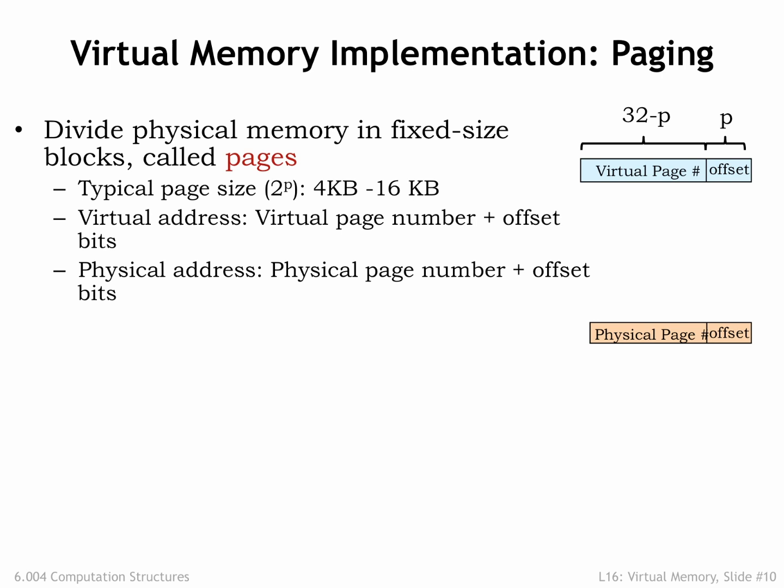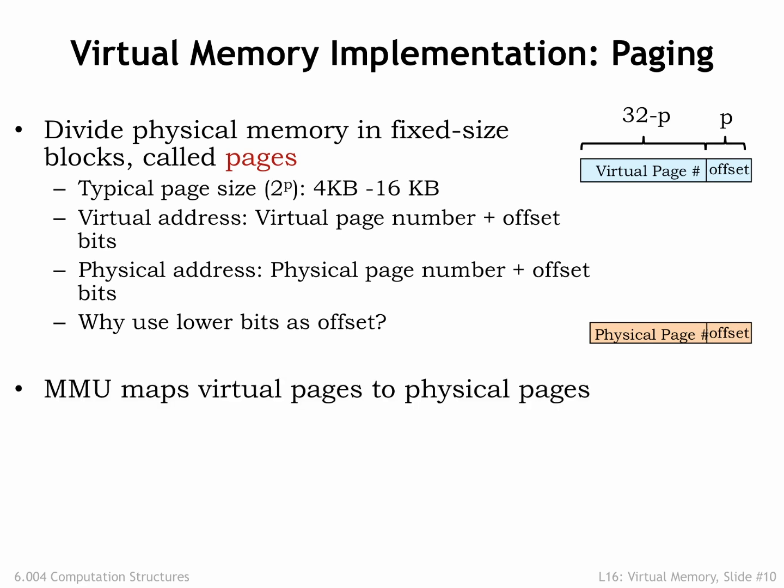We'll move entire pages from secondary storage into main memory. By the principle of locality, if a program accesses one location on a page, we expect it will soon access other nearby locations. By choosing the page offset from the low-order address bits, we'll ensure that nearby locations live on the same page. So pages naturally capture the notion of locality, and since pages are large, by dealing with pages when accessing secondary storage, we'll take advantage that reading or writing many locations is only slightly more time-consuming than accessing the first location.